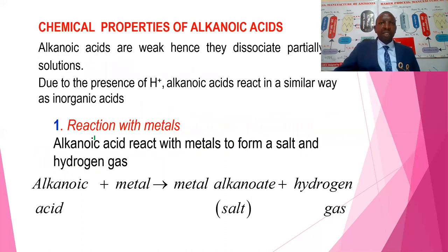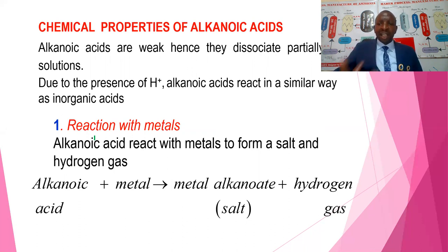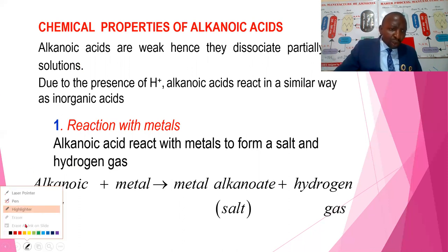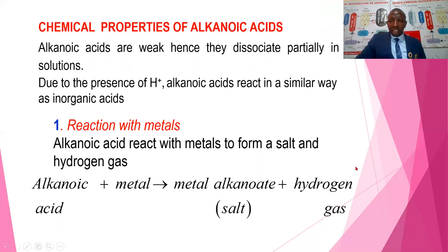Chemical properties: let's look at some of the chemical properties of alkanoic acid. Alkanoic acids are just like other acids, although they are normally weak acids — like ethanoic and propanoic. Most straight-chain monocarboxylic alkanoic acids are usually weak, but not all organic acids are weak. Because they contain hydrogen ions, they react in a similar way to other mineral acids. For example, reaction with metals: acid plus a metal gives salt plus hydrogen gas, producing a metal alkanoate as the organic salt.